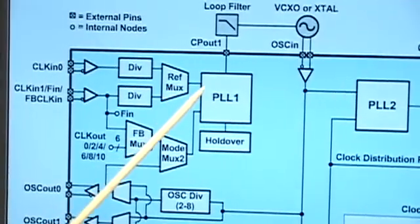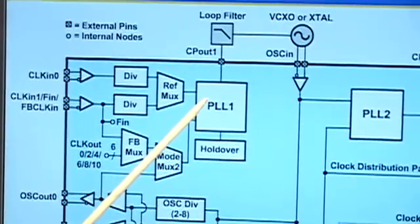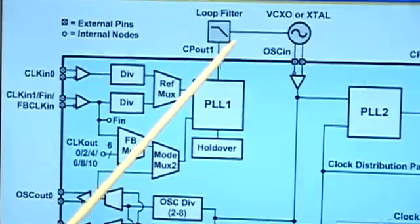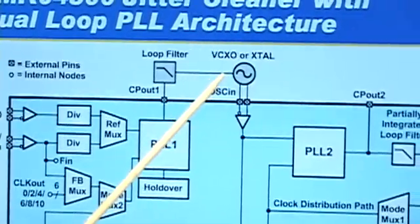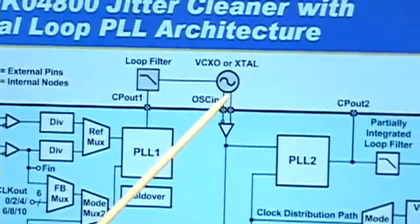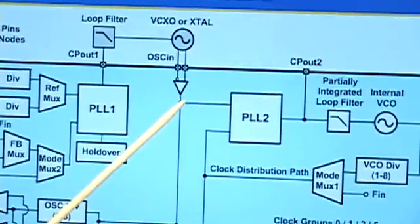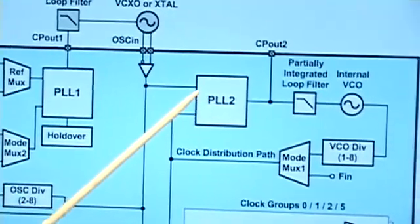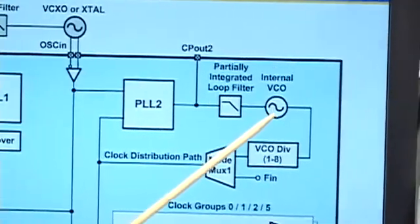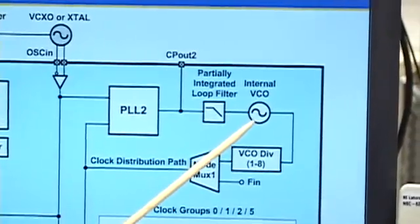The reference clock is then fed to PLL1, which achieves jitter cleaning using an external VCXO or crystal. That provides a very stable and low noise reference for PLL2, which achieves the high-frequency clock generation using an internal low-noise VCO.